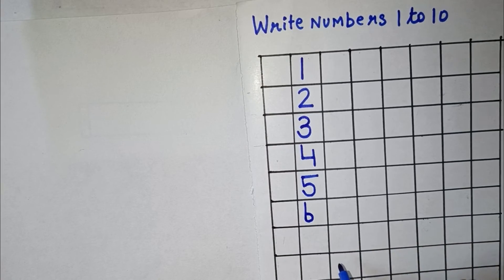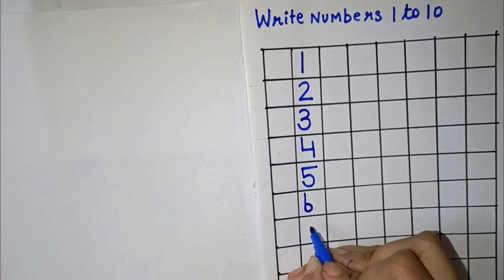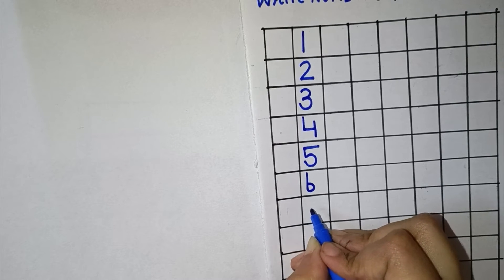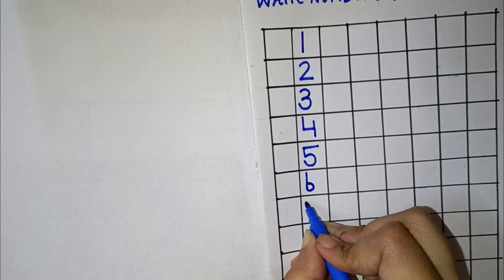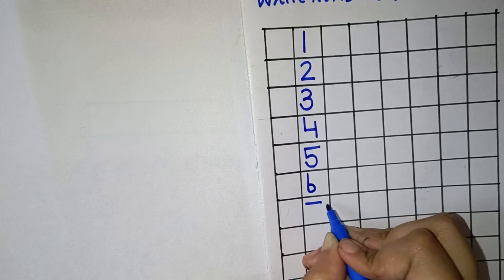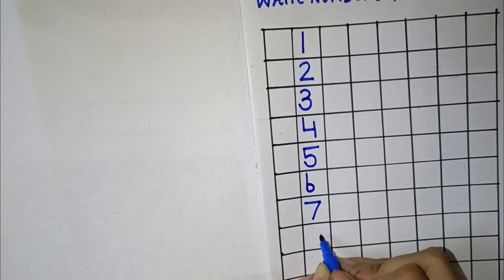Now the next number we have to write is 7. So how we will write 7? First, we will draw a sleeping line and then a slanting line. This makes number 7.